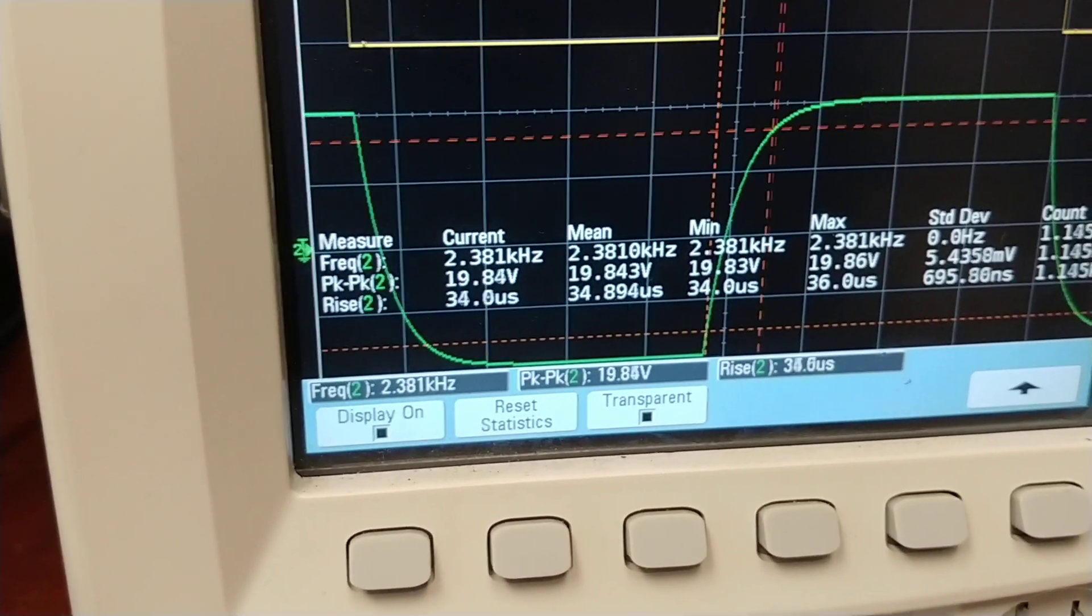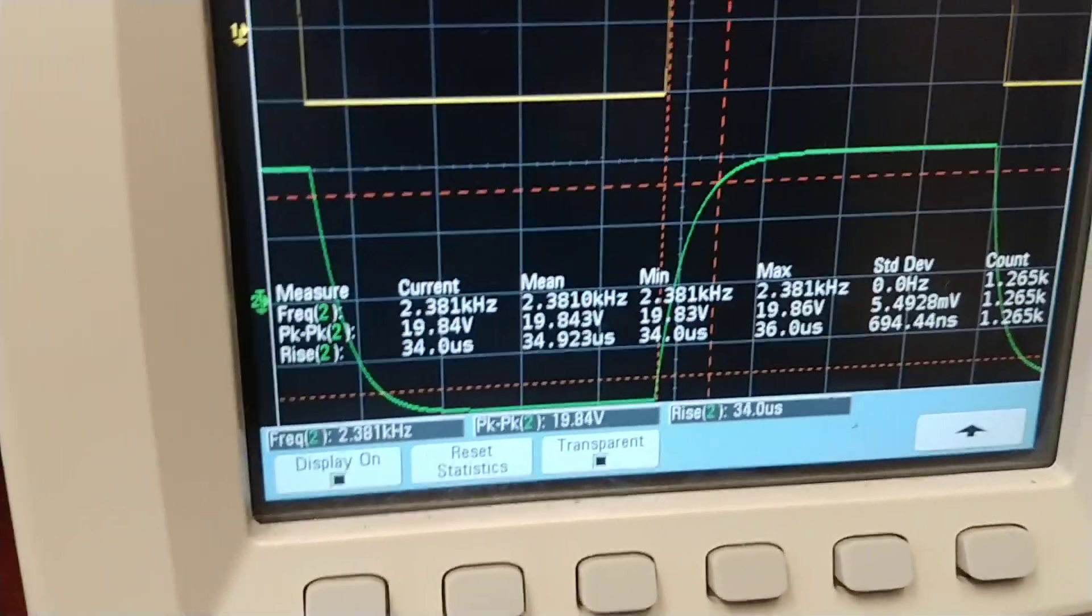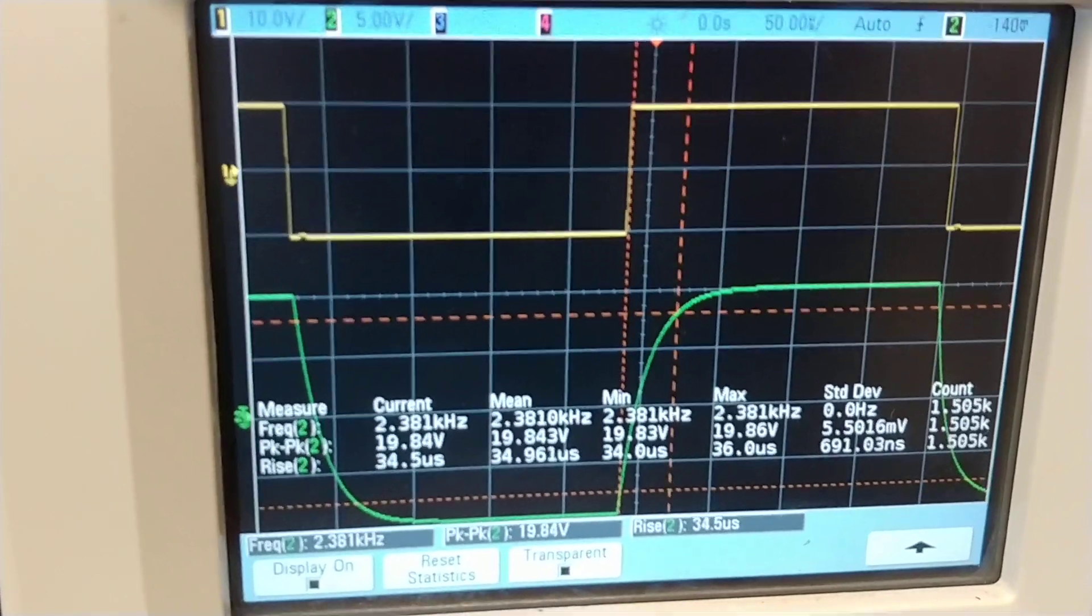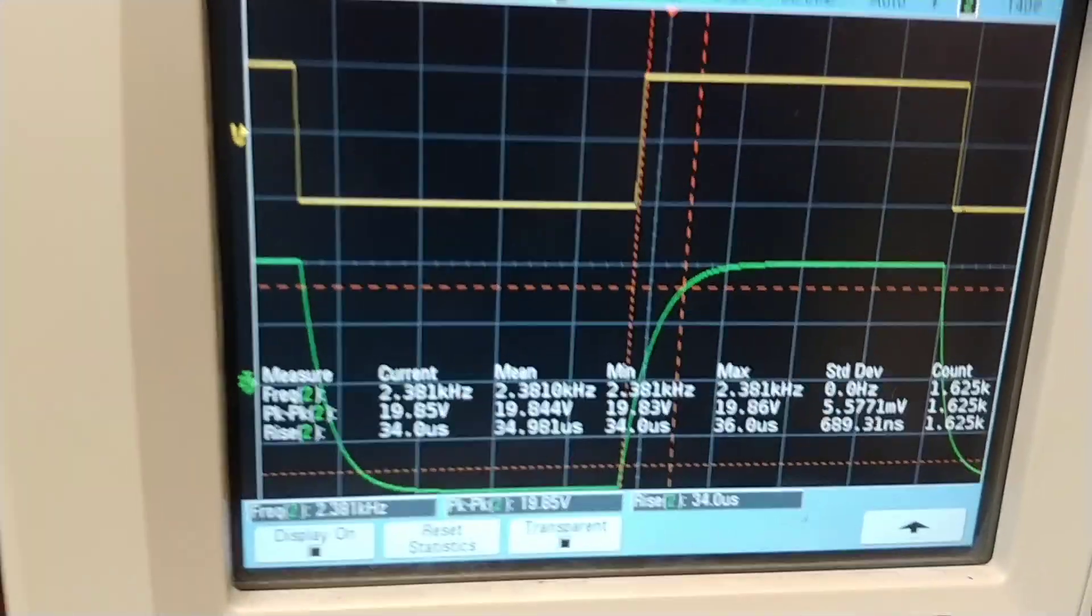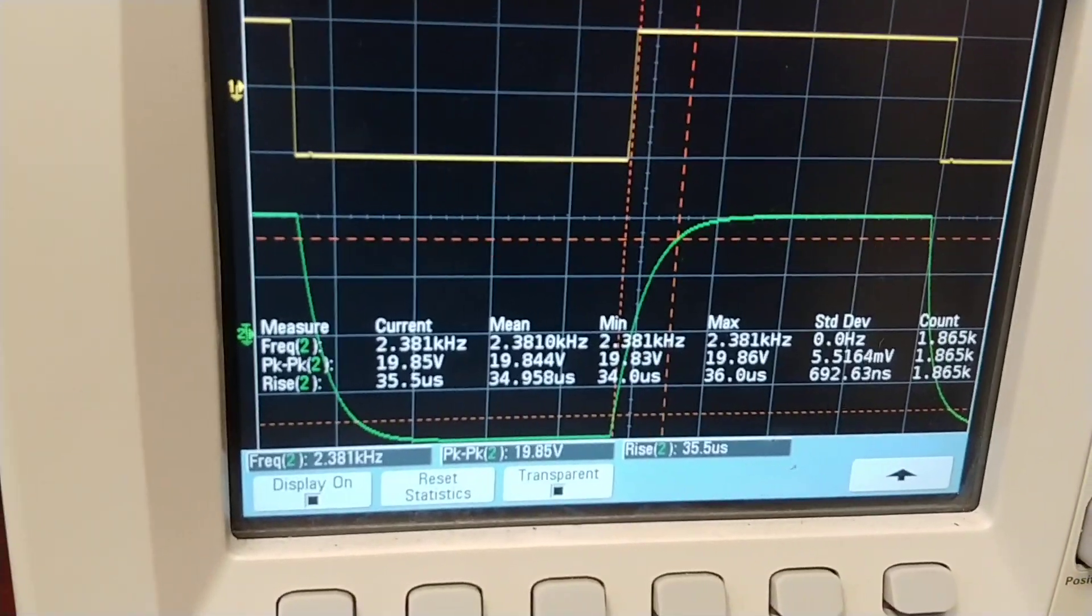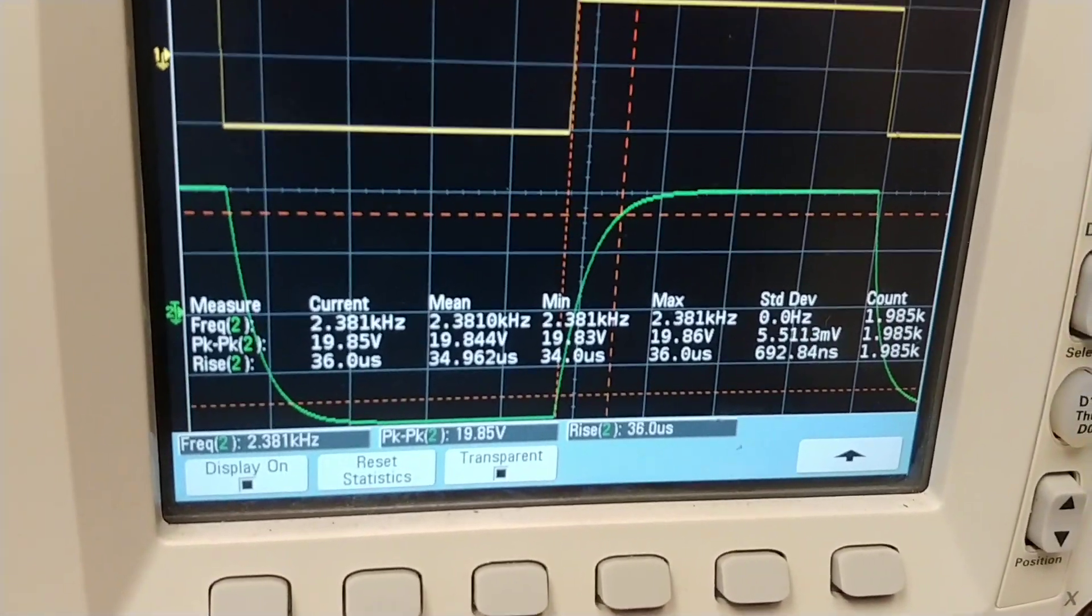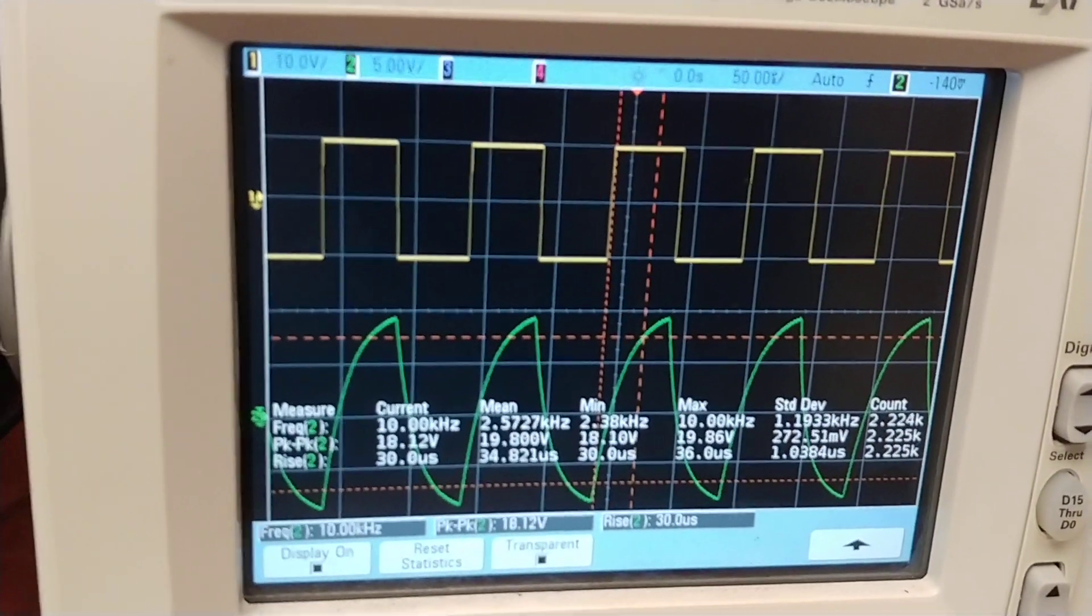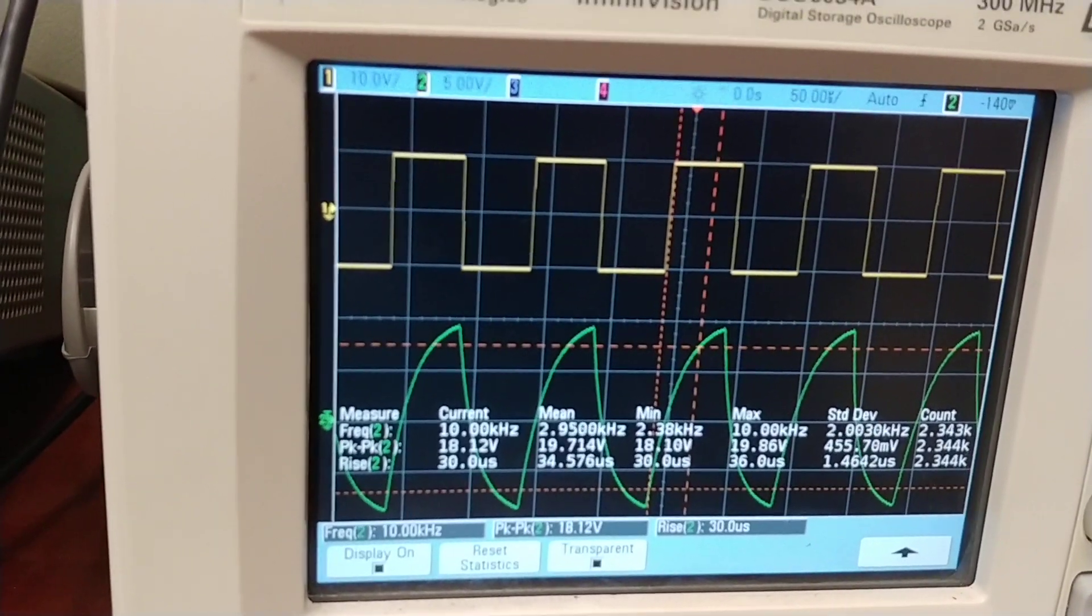So now let's find the 3dB point with a sine wave. Off camera here I'm setting the frequency to 999.9 Hertz, and I'm setting it to a sine wave.